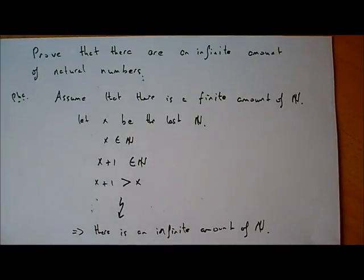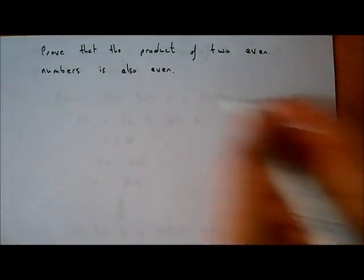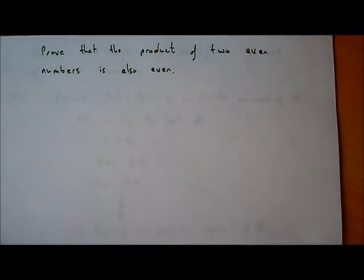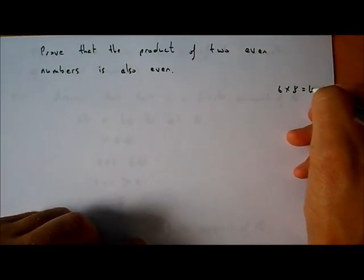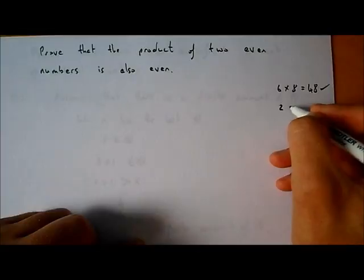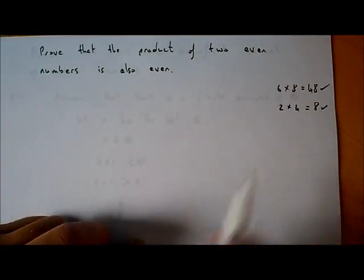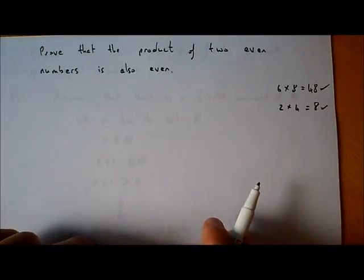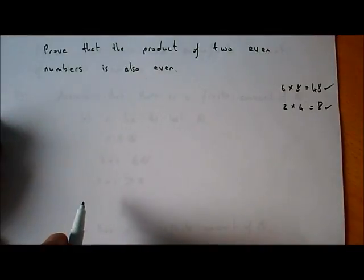That's an example of a proof by contradiction. Let's have a look at another one. We're going to prove that the product of two even numbers is also even — product means multiply. Let's look at a few examples: six times eight equals 48, which is even; two times four is eight, also even. What we want to prove is that for every pair of even numbers, multiplying them gives another even number.